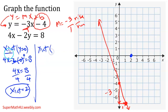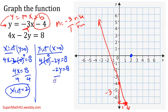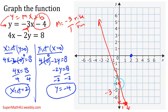Now I find the y-intercept by setting x equal to zero. The equation becomes 4(0) minus 2y equals 8, so negative 2y equals 8. Dividing both sides by negative 2, y equals negative 4. Those are my two points.